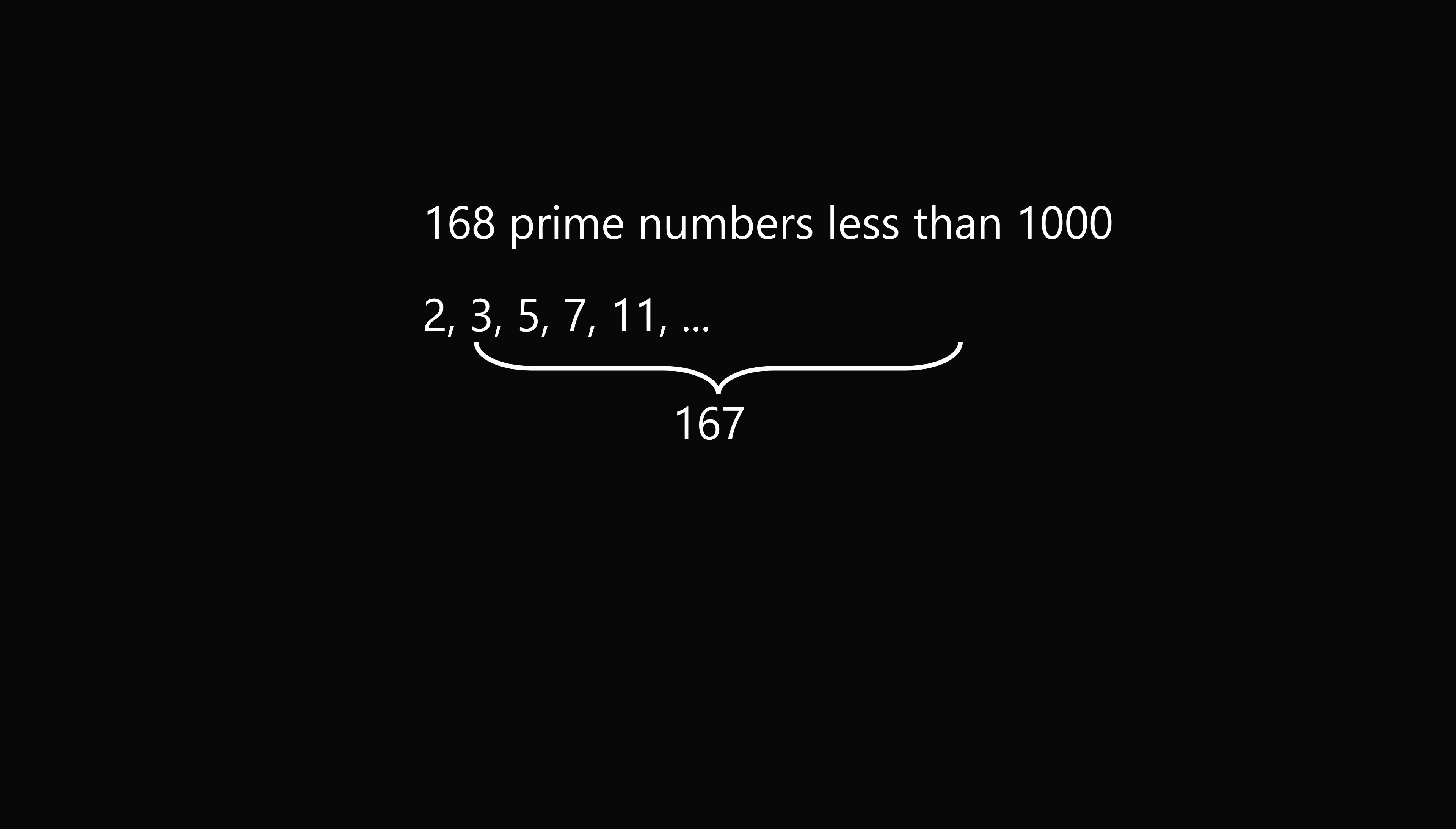So we know that of the 168 prime numbers, 167 of them are odd numbers. Now, we are adding an odd number of odd numbers, so their sum will be an odd number.